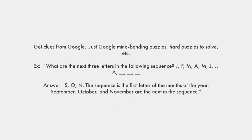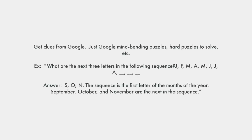Now let's look at some game question ideas. Once again, good friend Google has different questions that you can use — you can Google the word 'mind,' for example. I found this one is semi-hard, but it says: what are the next three letters in the following sequence? It gives you J, F, M, A, M, J, J, A, and then three blanks. The answer is S, O, N — the sequence is the first letter of the months of the year, and September, October, and November are the next in the sequence.